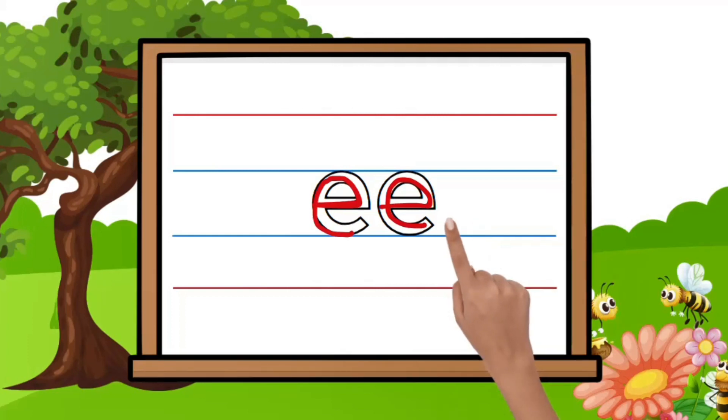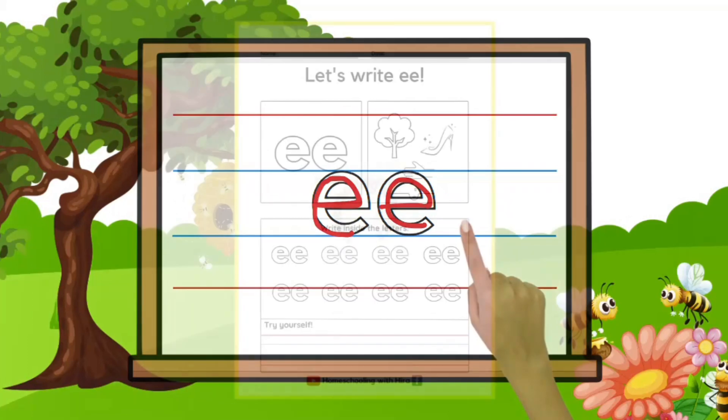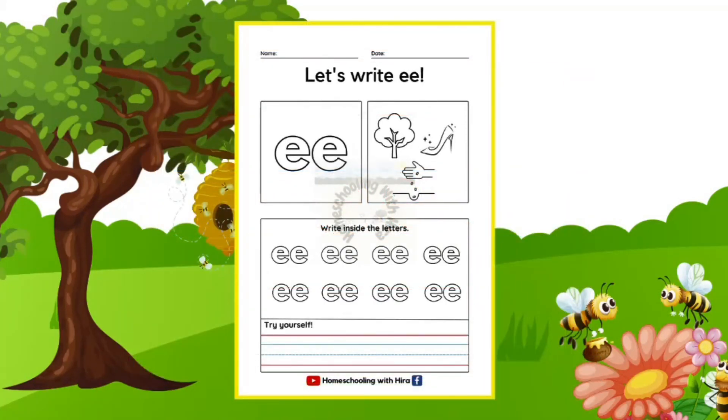Right. Now we are going to solve our worksheet, and since you already know how to write it, I'll be just writing it once and you can pause the video and complete this worksheet yourself. So let's write E here, E here. Do say the sound after writing it. E. E as in tree. E as in heel. E as in seeds. Can you see these little seeds? E.